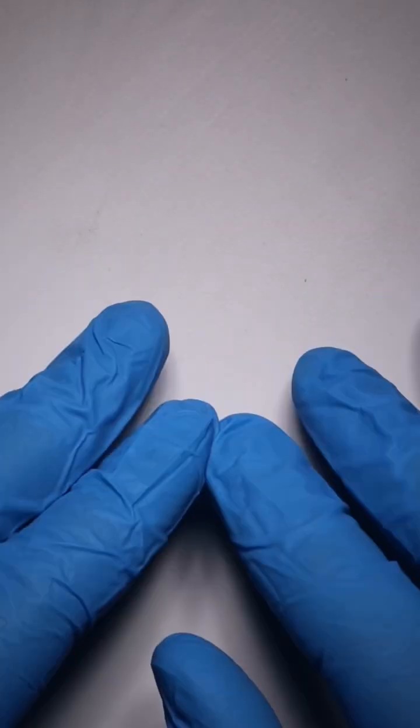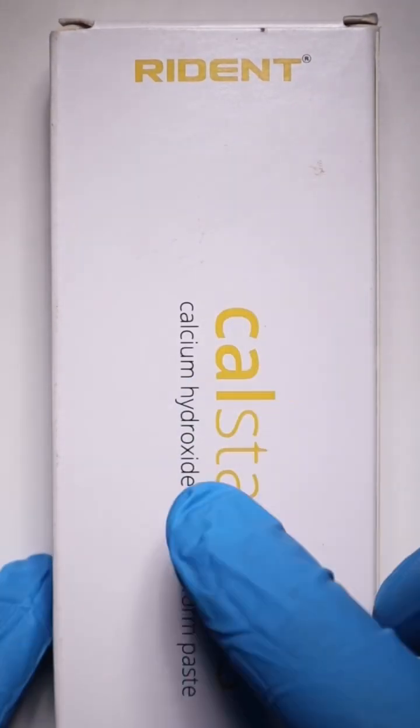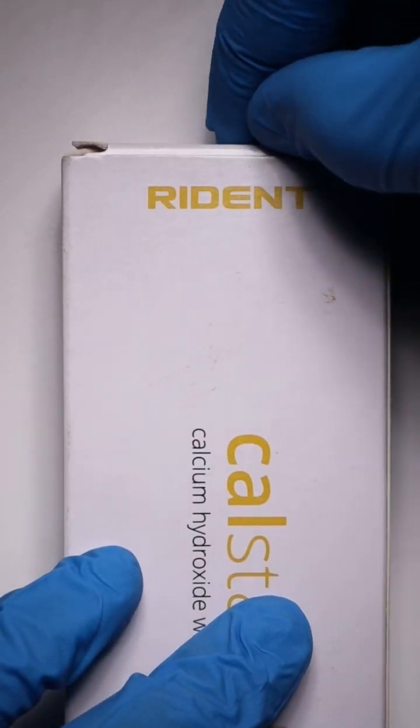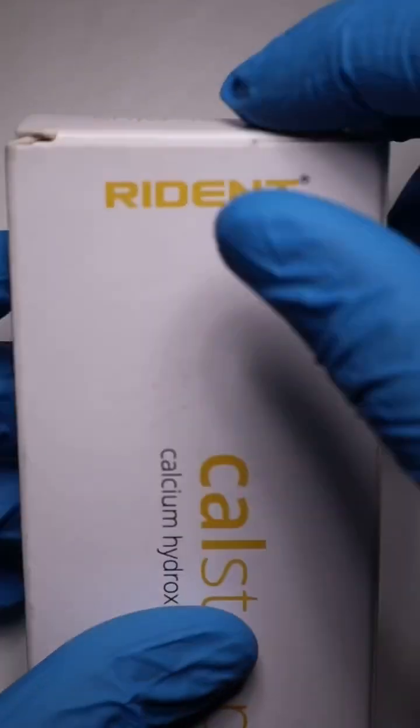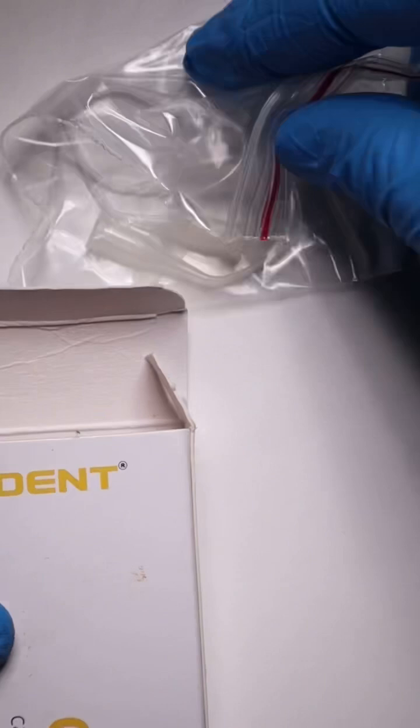Hi friends, today we have something new. This is calcium hydroxide and iodoform paste from Rident and it's called CalStar Plus. When we open up the box, what we see are some delivery tips.